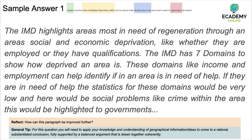For example, it mentions social and economic deprivation very casually, saying 'like whether they are employed or have qualifications' — very vague. It needs to be more specific. Refer to the IMD with greater specificity. Avoid using casual words like 'like' in your answer; this communicates that you don't have authority over your subject. The candidate says the IMD has seven domains but doesn't actually name what those seven domains are — that's very important.